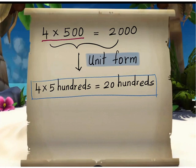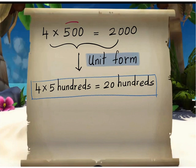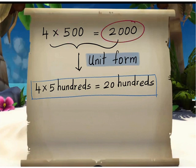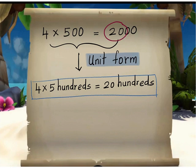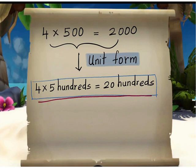4 times 500 equals 2000. When we write this in unit form, instead of 500 we can write 5 hundredths, and 2000 can be written as 20 hundredths, since there are 20 hundredths in 2000. So 4 times 500 equals 2000, or in unit form, 4 times 5 hundredths equals 20 hundredths.